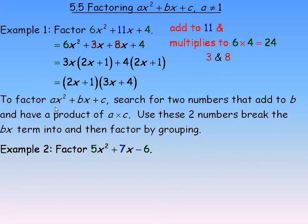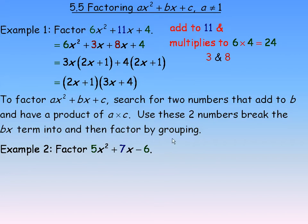So the procedure — and this isn't the only way to factor a trinomial of this form, but this is the one we will focus on in this lesson — is: to factor ax squared plus bx plus c, search for two numbers that add to b and multiply to the product of a and c. Then use those two numbers to break the bx term into two different terms, and factor by grouping.